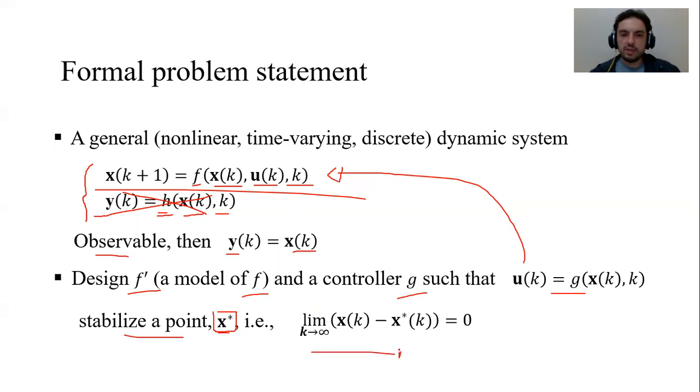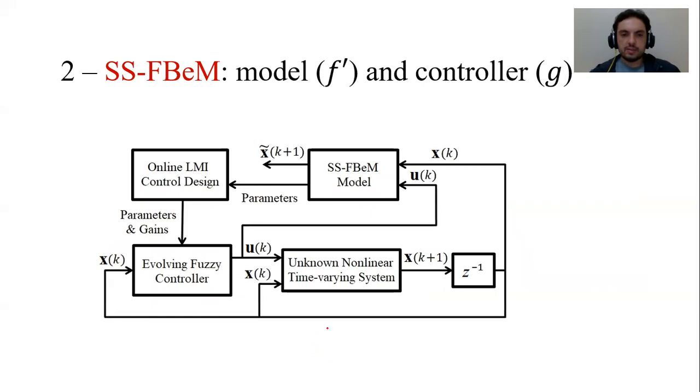As the time goes by, the system states should converge to this X star. Schematically, this is what I have just said. We have an unknown nonlinear time-varying system F. A data stream comes from this system. An online learning algorithm develops the fuzzy model SS-FBeM model F prime. We solve linear matrix inequalities.